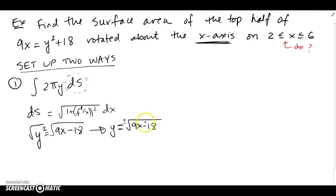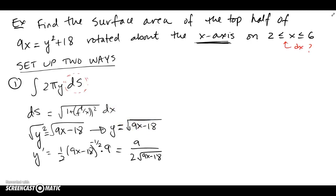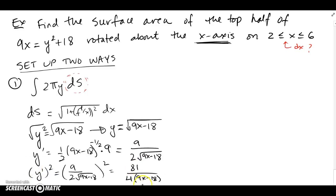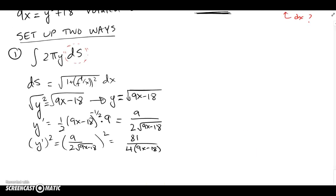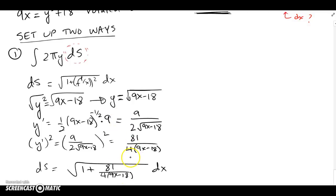Keeping the positive square root, let's find y prime. We have y = sqrt(9x − 18), so bring down the one-half and apply the chain rule, multiplying by the derivative of the inside. Squaring y prime gives 81 over 4(9x − 18). Now DS is sqrt(1 + 81/[4(9x−18)]), which doesn't look very pleasant. Maybe a dy problem would have been easier, but we'll set it up both ways.